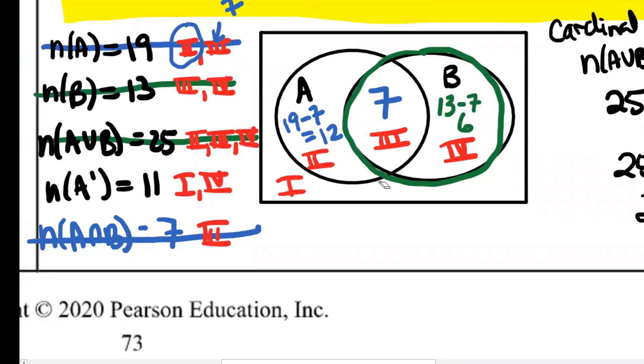So does A complement include region one? Yes. It says that there are 11 elements split between region one and region four. There are 11. A complement is everything outside of A, right? That means that there are 11 altogether in regions one and four, the yellow regions. Six of them have already been placed in region four. So how many are left for region one? So you take 11 minus six and you get five and we're done.